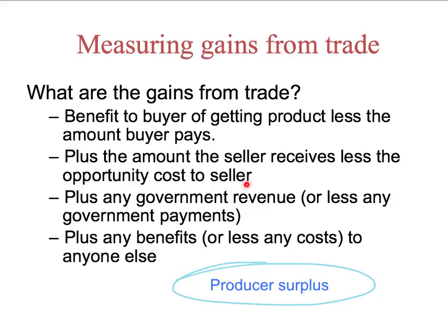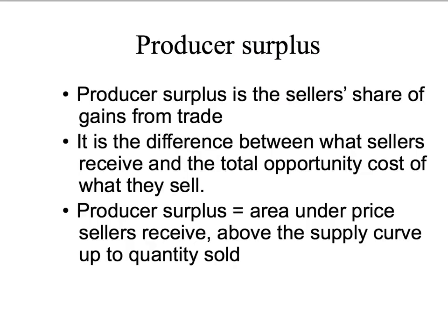In other words, producer surplus is simply the seller's gains from trade. And in the last presentation, we noted that the producer surplus is the difference between what the sellers receive and the total opportunity cost of what they sell, and that we can get producer surplus by looking at the area under the price sellers receive, above the supply curve, up to the quantity sold.